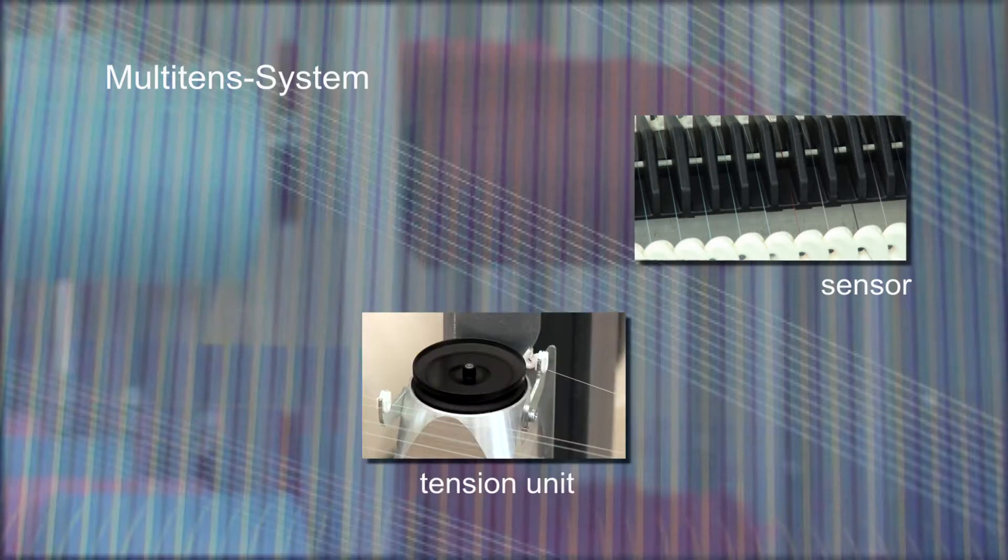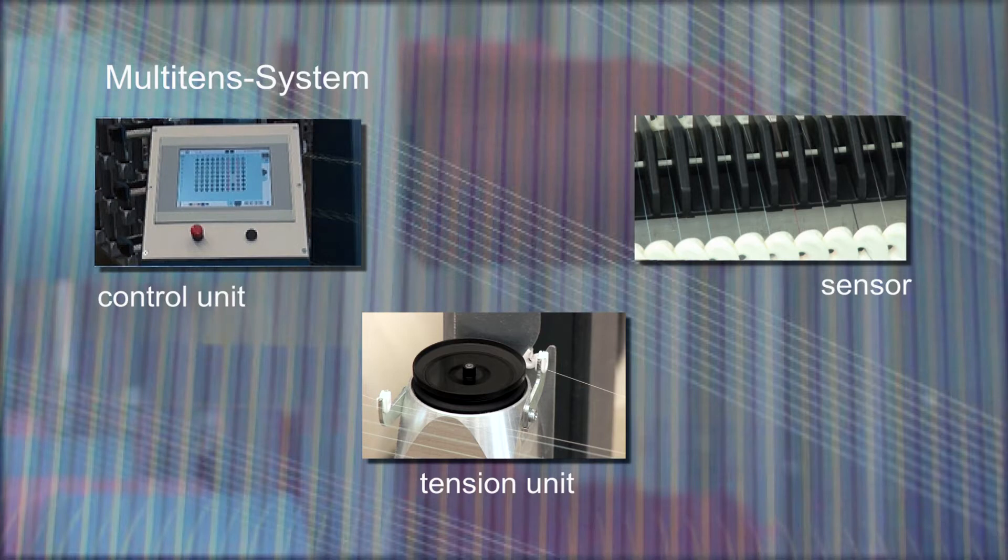Sensors on the creel outlet and yarn tensioners at all package positions combined with the control unit form a system which precisely controls the yarn tension.